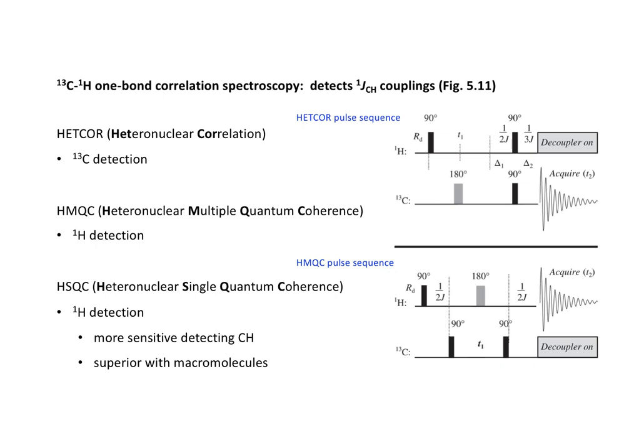This video is on carbon-13 to proton one-bond correlation spectroscopy methods. This is actually covered in Chapter 5 of the textbook. However, I am including it in the introductory module on carbon-13 NMR because of the value of this method in linking directly carbon-13 nuclei with covalently bonded protons.